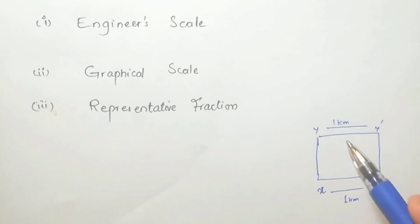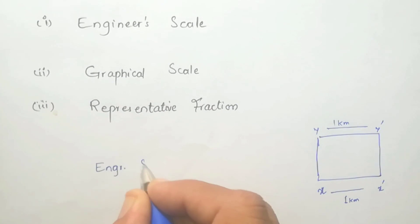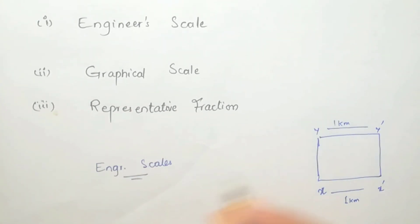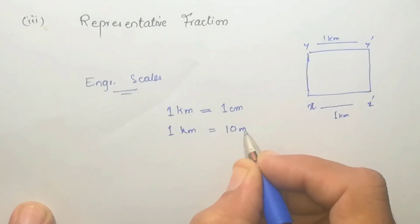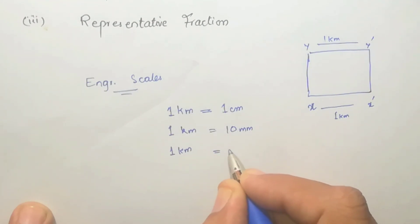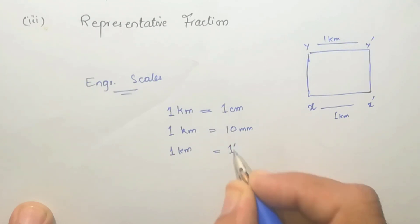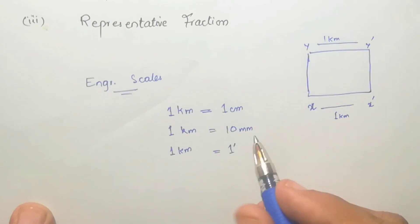Using the Engineer's Scale, one kilometer can be represented as one centimeter, or ten millimeters, or one inch on the drawing sheet. We convert the large length into smaller units for convenience on the drawing sheet — this is called the Engineer's Scale.